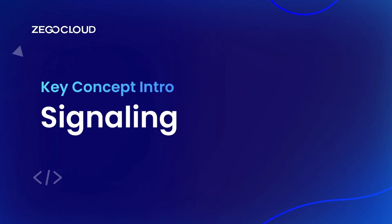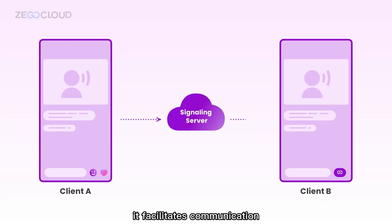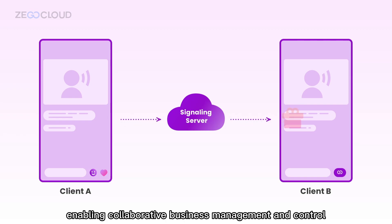Signaling is a protocol or message to manage communication and connections in networks. In internet applications, it facilitates communication between the server side and client side, enabling collaborative business management and control.